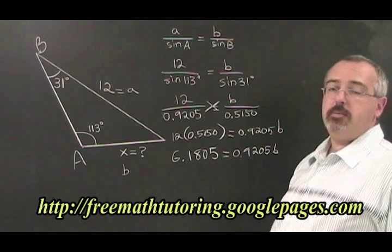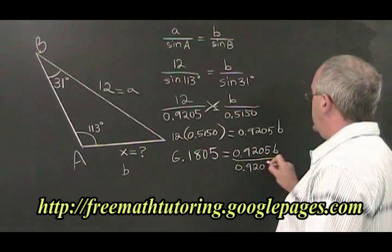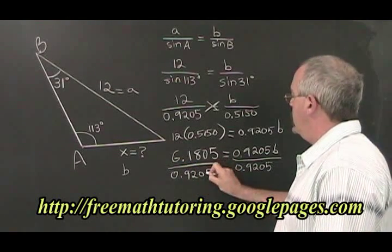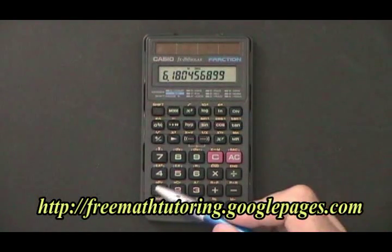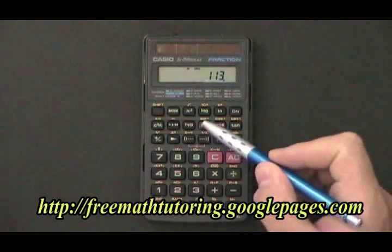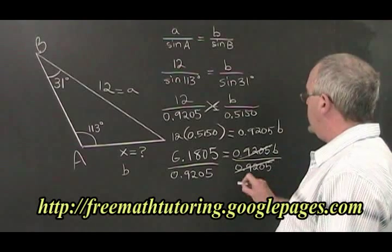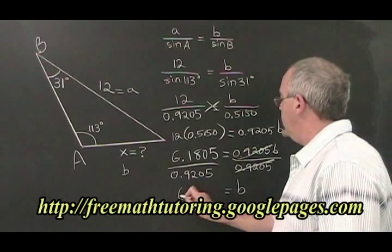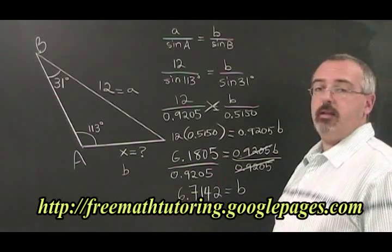Since our variable b is being multiplied by 0.9205, we divide both sides by 0.9205 in order to cancel it out. 6.1805 divided by the sine of 113 degrees is equal to 6.7142. These two numbers cancel out and our b is equal to 6.7142. And we have found the length of our missing side b.